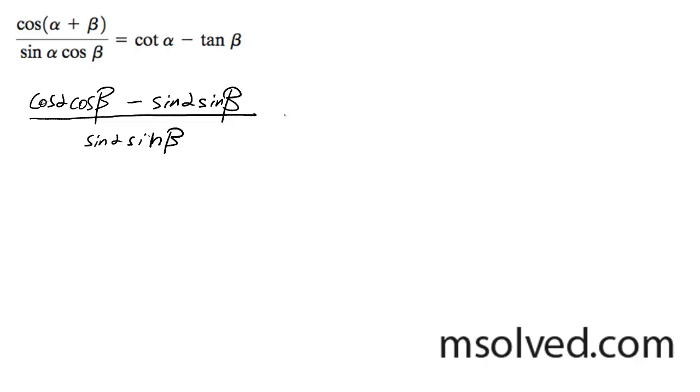What I'm going to do next is break these apart in order to get what I need on the right side of the equation. So this is going to be cosine alpha cosine beta all over sine alpha sine beta, minus sine alpha sine beta all over sine alpha sine beta.